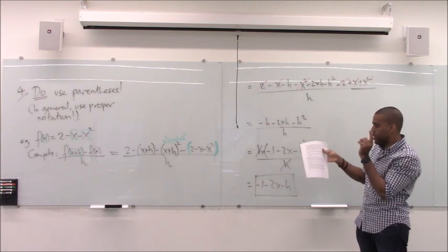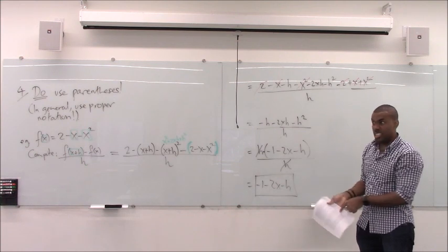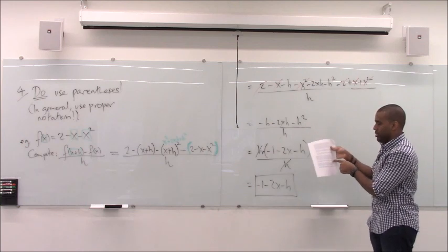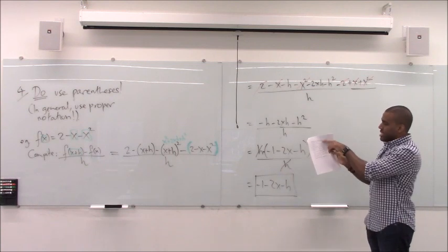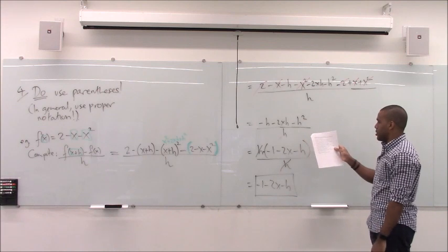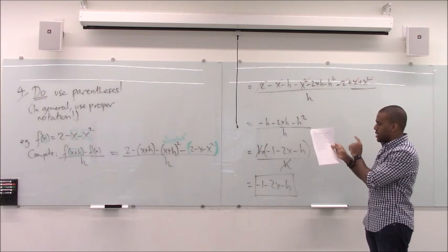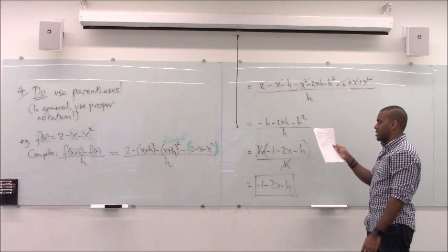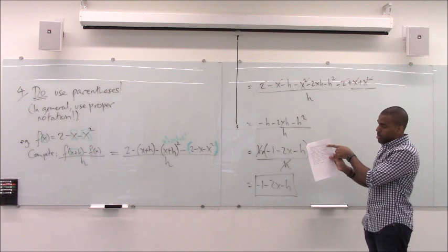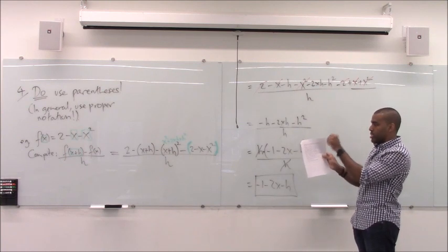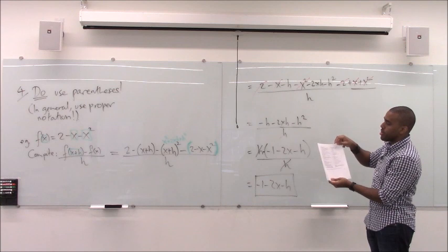Usual classroom rules: no eating in class, you can drink coffee — I don't know if that's technically allowed but don't tell anybody. Do not cheat — if you cheat, I will fail you. As for important dates: first day of classes, spring break, Easter break, midterms week, finals week, and the last day of classes are all listed. The last day to withdraw from the class is also noted.